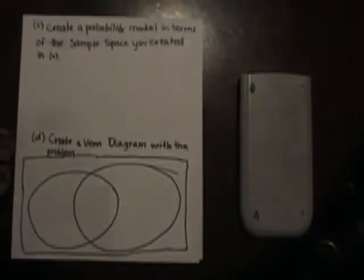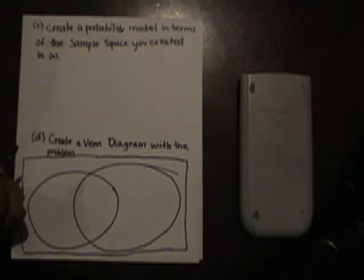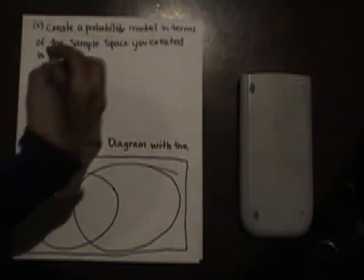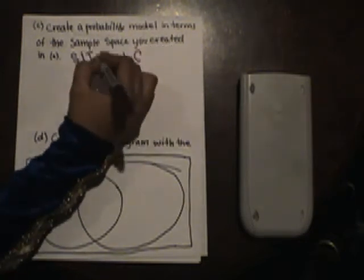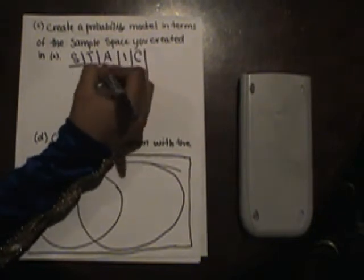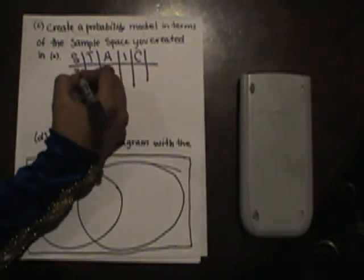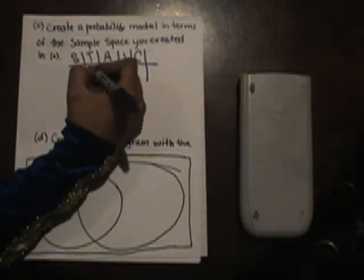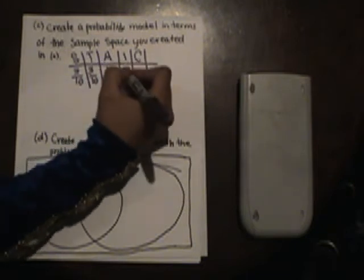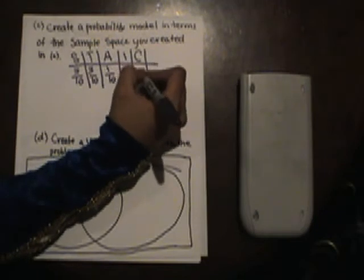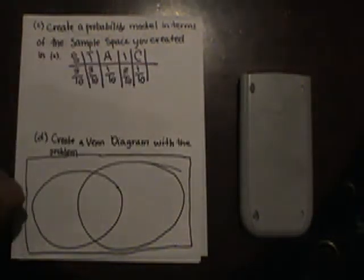Next question: create a probability model in terms of the sample space you created in part A. Our probability model is either a list of possible outcomes or an assigned probability for each outcome. Our possible outcomes are S, T, A, I, and C. The probability of S is 3/10, since there are three out of ten letters. For T, it's also 3/10. For A, it is 1/10. For I, it's 2/10. And for C, it's also 1/10. Adding them all together: 3+3+1+2+1 = 10, so they sum to 10/10 = 1, which confirms the probability model is correct.